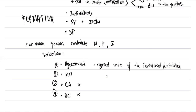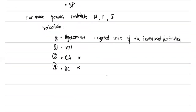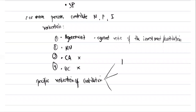So to summarize the valuation hierarchy: first, agreement; if no agreement, market value; if no market value, carrying amount. Now for specific valuation of contributions — we can contribute money, property, or industry. Money should be valued at face value. Whatever is the amount of the money contributed, that is the amount carried on the books. You cannot agree on a different value for money.